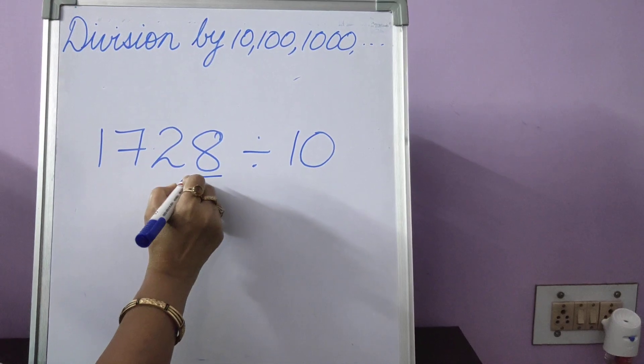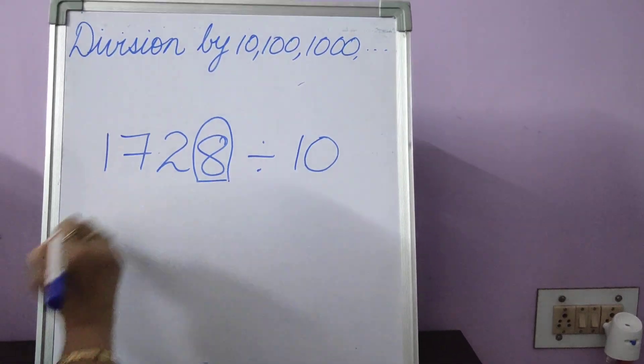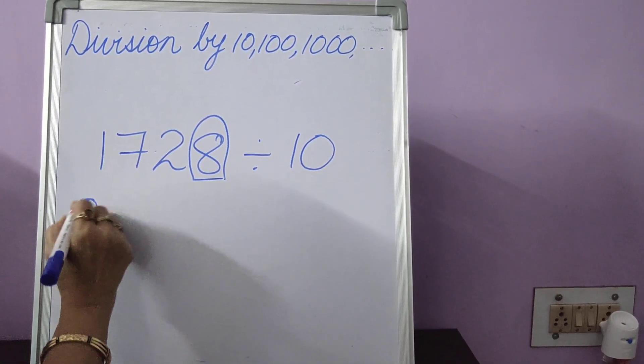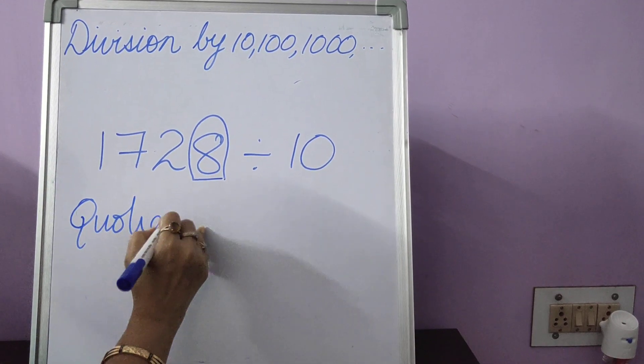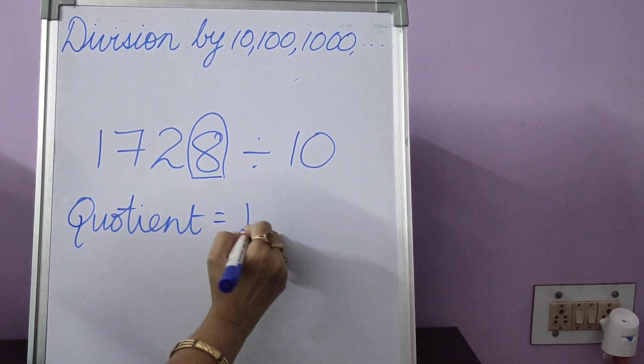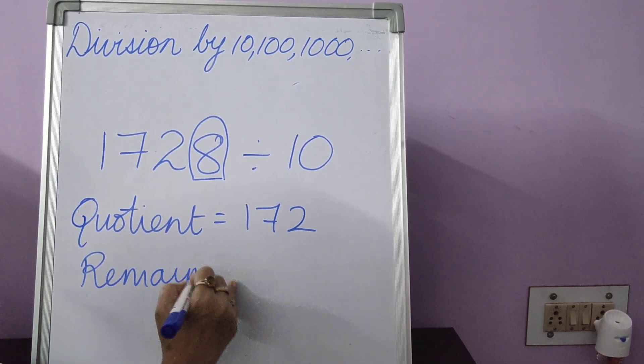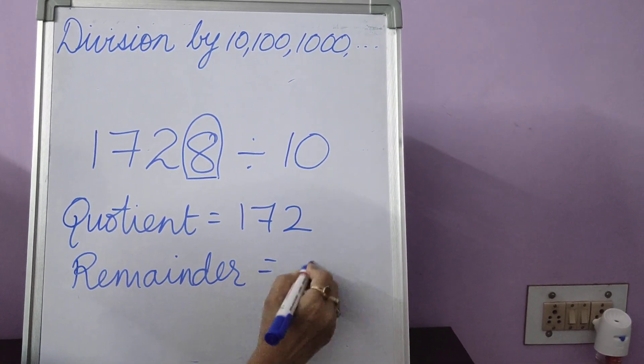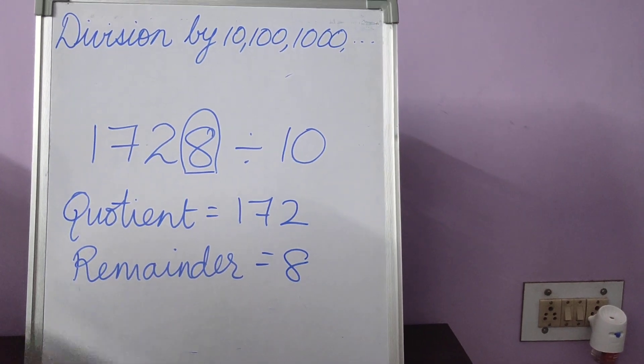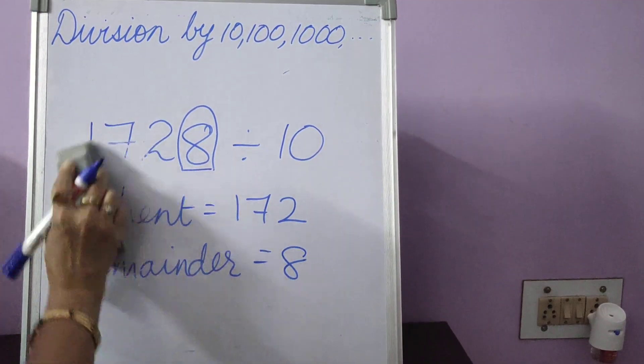So one place, underline, put it in a circle. What is outside is the quotient. So quotient is 172 and remainder is 8. How many seconds? When you do it, count it on your own. How many seconds did you take? That's it. Finished.